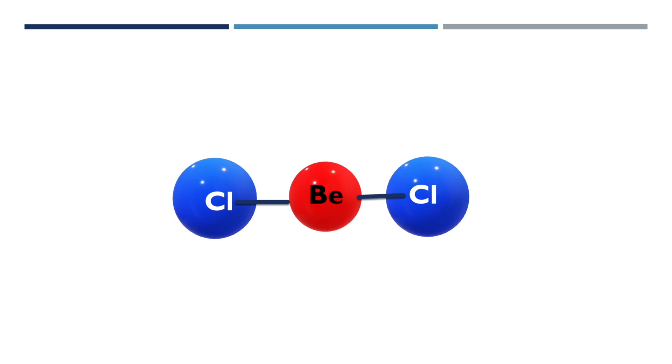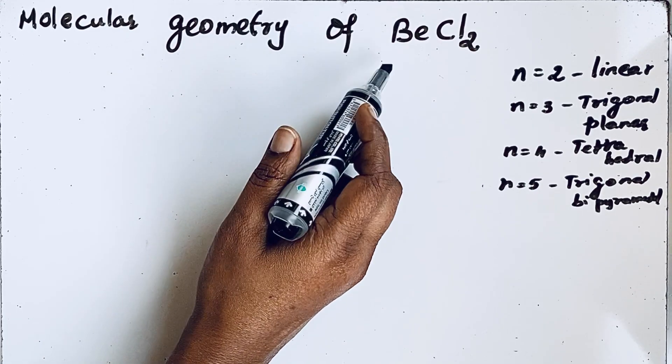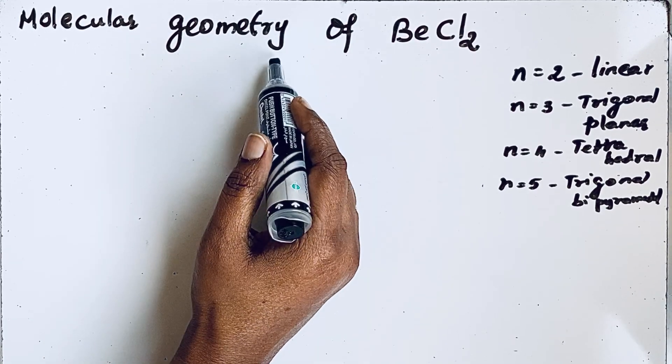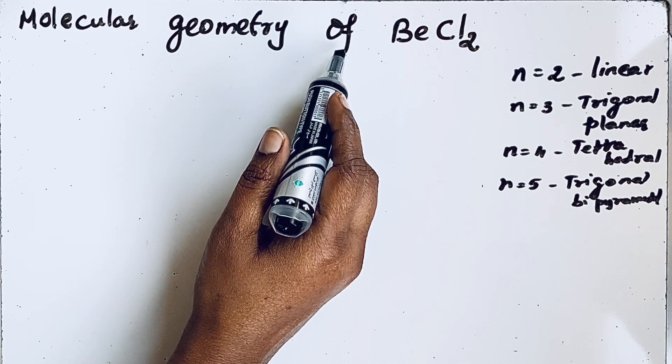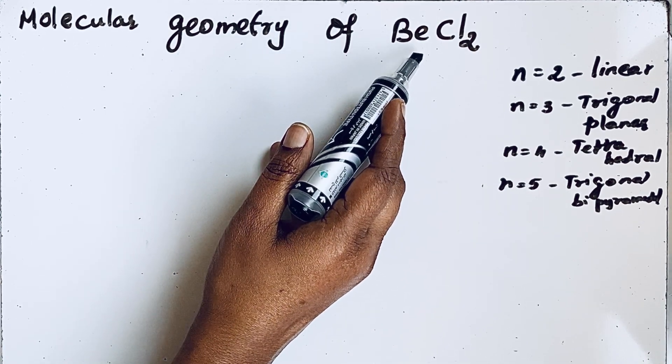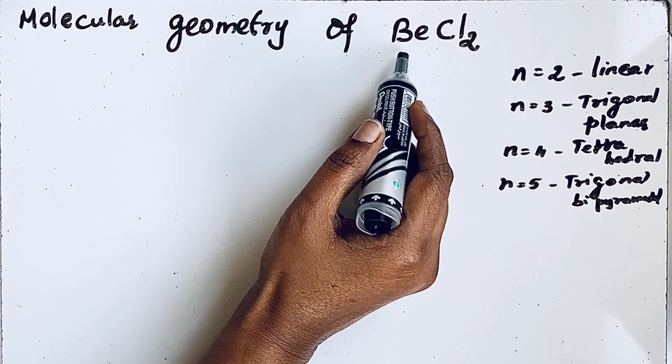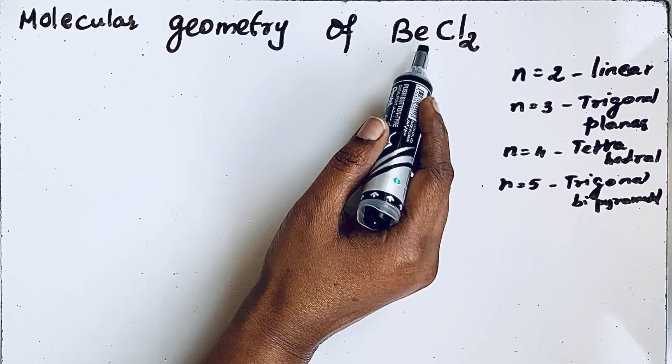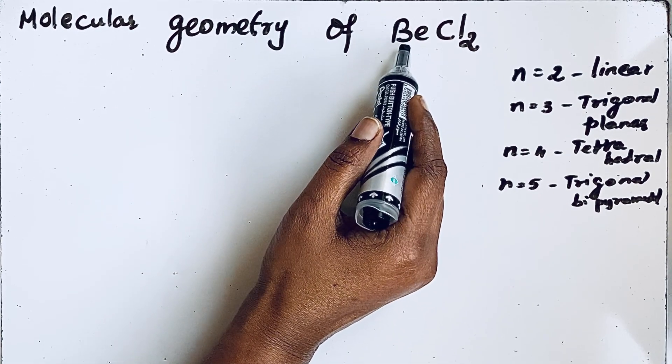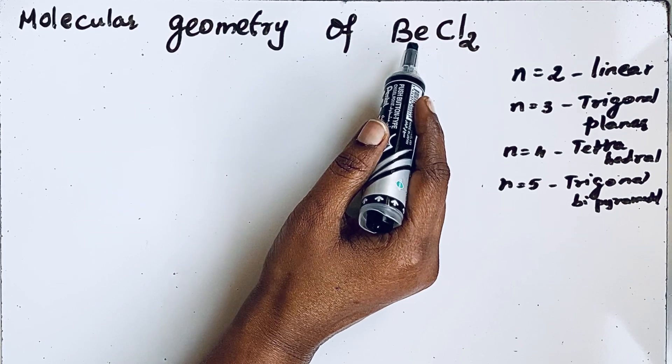We are here to draw the molecular geometry of BeCl2 molecule. To find the molecular geometry, first we should know the central atom. In BeCl2 molecule, beryllium is the less electronegative element. In a compound, the less electronegative element takes the position of the central atom.